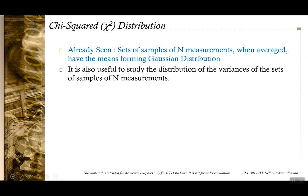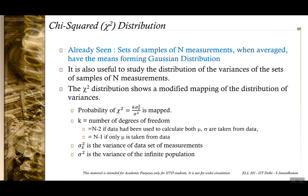It is also useful to study the distribution of variances of sets of samples to get a different idea of how the variances are related to the variance of an infinite distribution or infinite-length data set. That study is done by exploring the chi-square distribution — it is a modified way of analyzing the distribution of the variances.